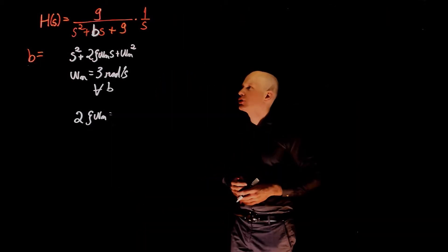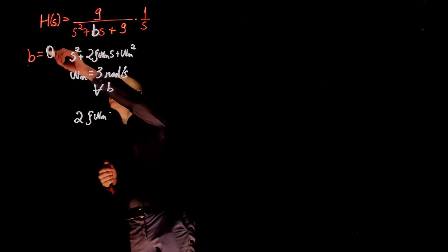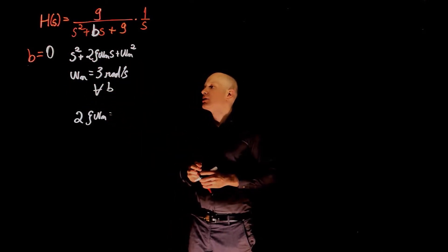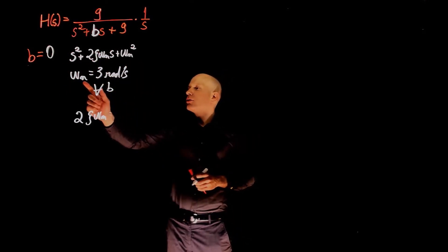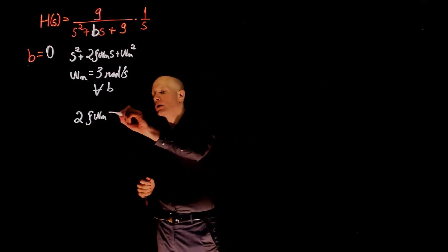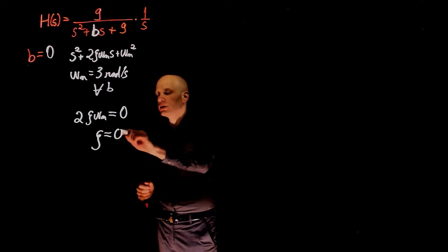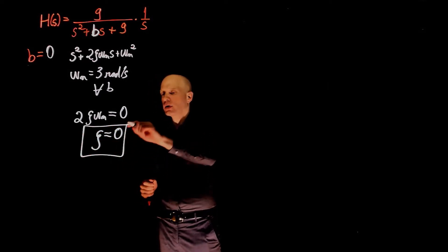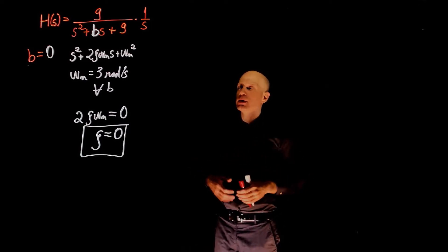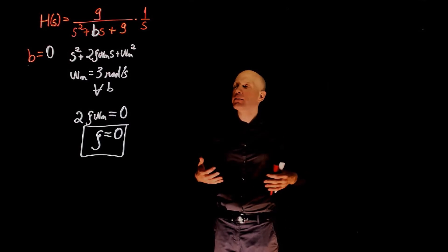Now let's repeat the same question for b equals to 0. If b is 0, the s term disappears. The natural frequency is still 3 radians per second, but now 2 zeta omega n equals to 0, which means zeta is 0. Zeta equals to 0 means there is no damping in the system — nothing dissipating energy. The system is called an undamped system.